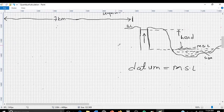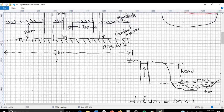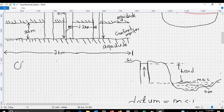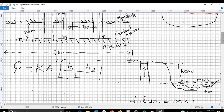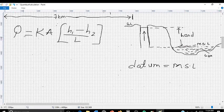In order to solve this problem, we are going to use this formula. Q equals KA open bracket H1 minus H2 over L close bracket. This formula is derived from Darcy's law.